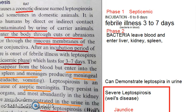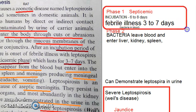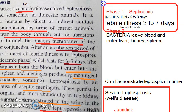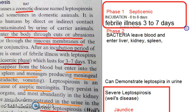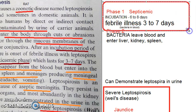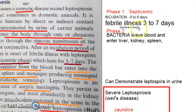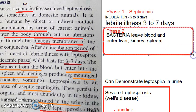Once the bacteria enters, it will go into incubation for six to eight days — you will not even know you have been infected. After that, the febrile illness will start, which will last for three to seven days. At this time, bacteria can be detected in the blood, so this is called the septicemic phase.